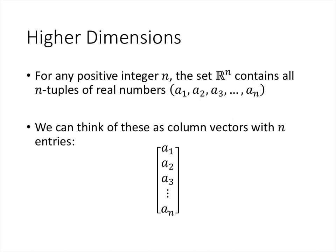Now we don't have to restrict ourselves to two dimensions, although two-dimensional vectors are easiest to visualize. But for any positive integer n, the set Rn contains all n-tuples of real numbers. And remember that word n-tuple here is just a generalization of a pair or a triple. It's just an ordered list of numbers where there's n of those numbers. So a1, a2, a3, and so on, all the way up to a_n. And then we can just think of that as the same as a column vector that has n entries or n components. So a1, a2, all the way down to a_n.